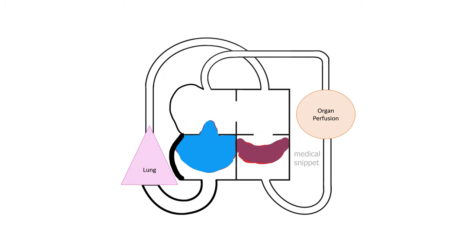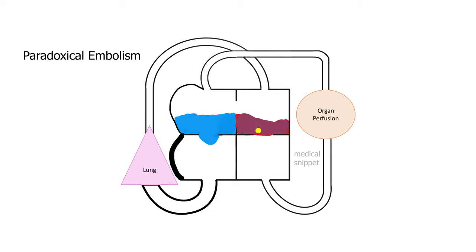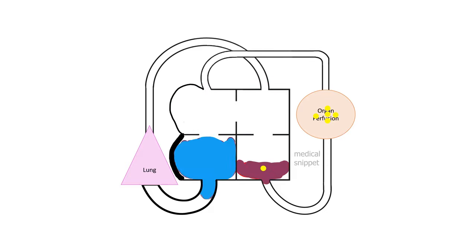One of the complications of atrial septal defect with right to left shunt is paradoxical embolism. That is an embolus which is carried from the venous side of circulation to the arterial side via the atrial septal defect with right to left shunt. The clinical manifestations are based on the site of embolus lodgment. It can cause multi-organ ischemia and infarction.